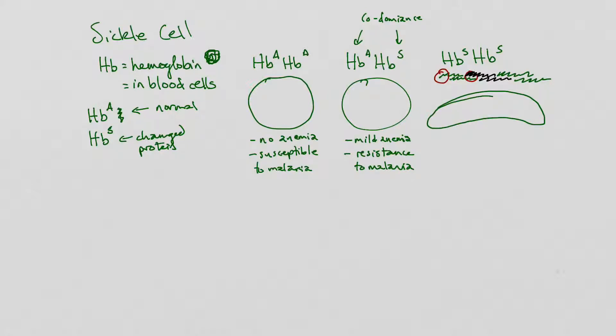And that's the sickle shape that they talk about in a sickle cell. This person has really bad anemia. They don't carry a lot of oxygen in their red blood cells. They run out of breath easily. Unfortunately, these people can also get malaria. And so, it's kind of the double bad whammy.